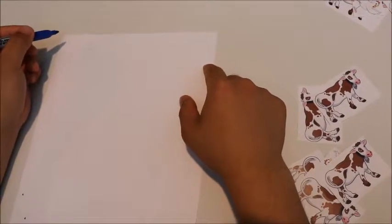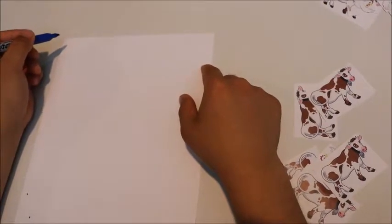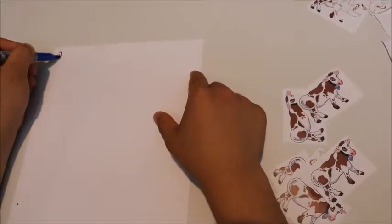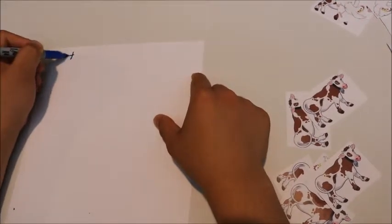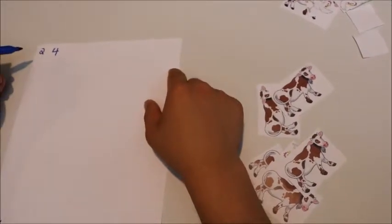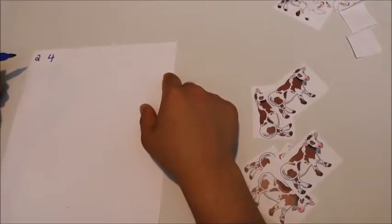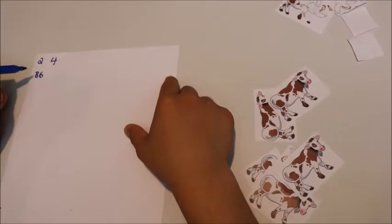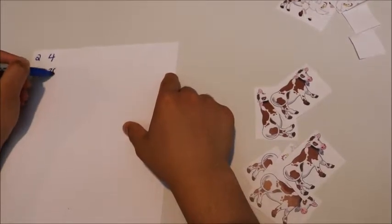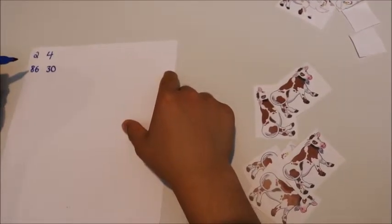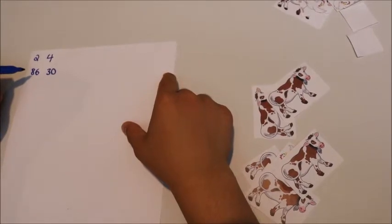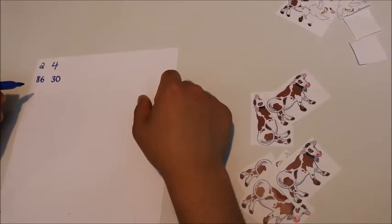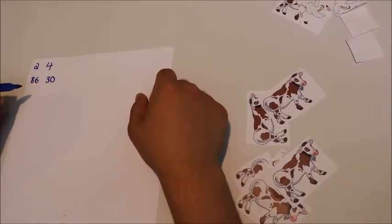Assuming each duck has 2 legs and each horse has 4 legs, when the 2 sons came back, the younger one said there are 86 legs. The older one said there are 30 heads. Now it's your turn to help solve this problem for Old MacDonald. How many ducks and how many horses does Old MacDonald have?